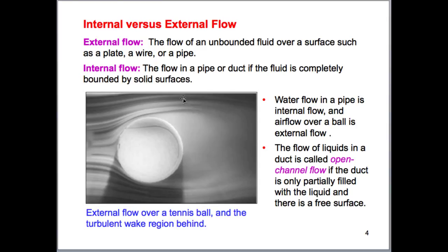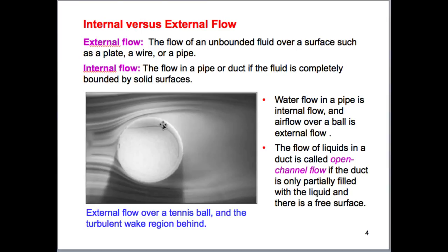We'll also look at some examples of external flows and internal flows. External flows are anything that's unbounded — a tennis ball or an airplane wing would be external flow. If we're looking at pipe flow, that would be considered an internal flow — something that has bounded walls prohibiting the flow from moving outward. These two different types of flows require two different types of analyses.